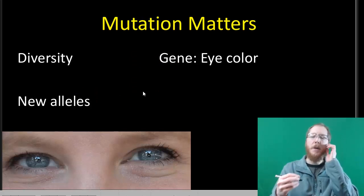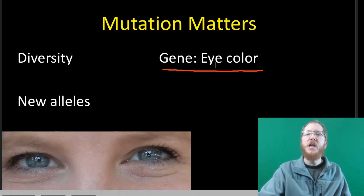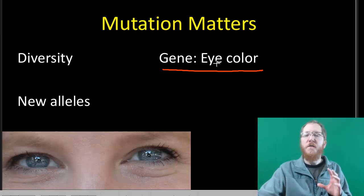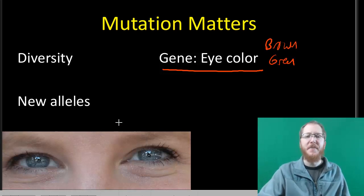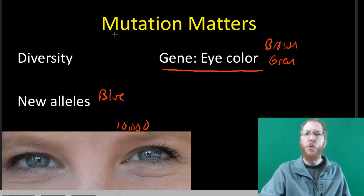We talk about mutations so much because we have these genes, thousands of them, and they code for specific things. One example gene would be eye color. For this gene of eye color, there's different alleles, different versions of it. You could have a brown allele, you could have a green allele. Somewhere around 10,000 years ago, there was a mutation that occurred that gave us a new allele, blue. We first saw blue eyes.